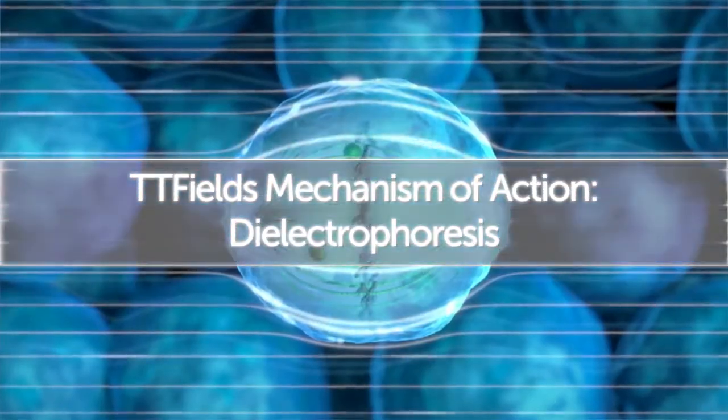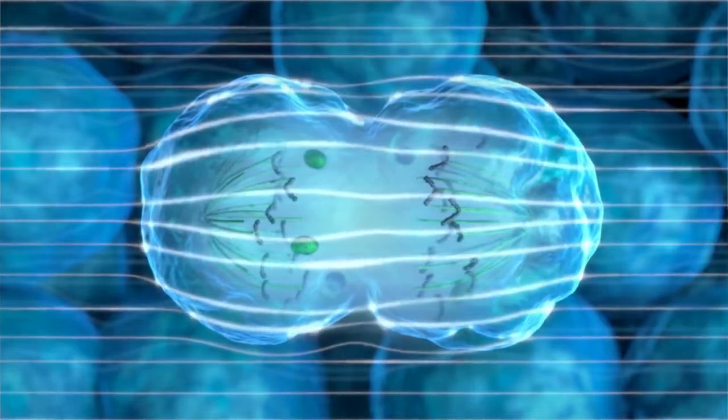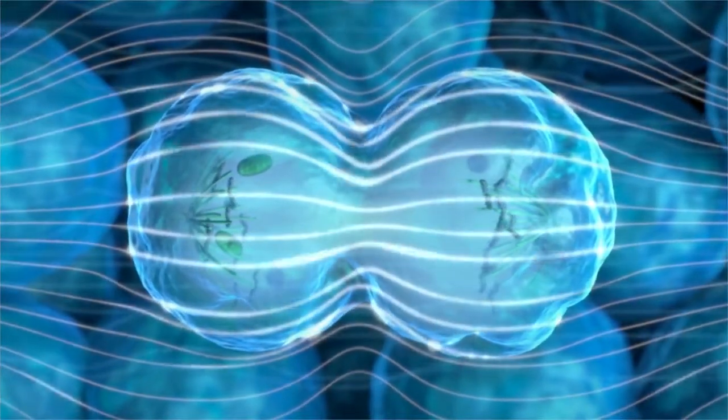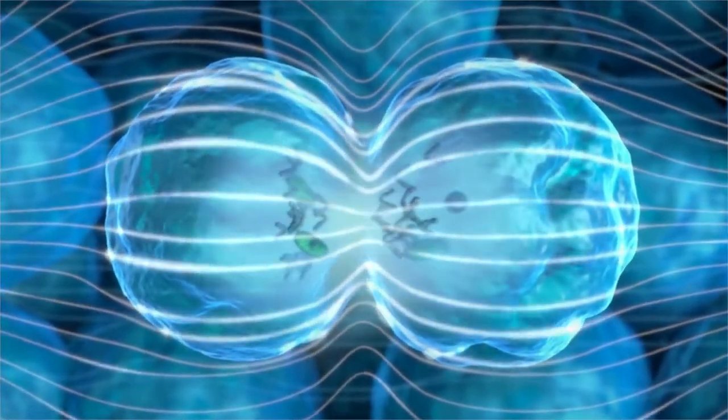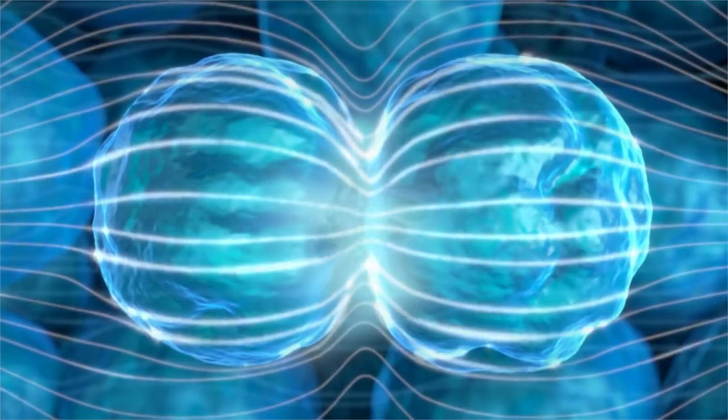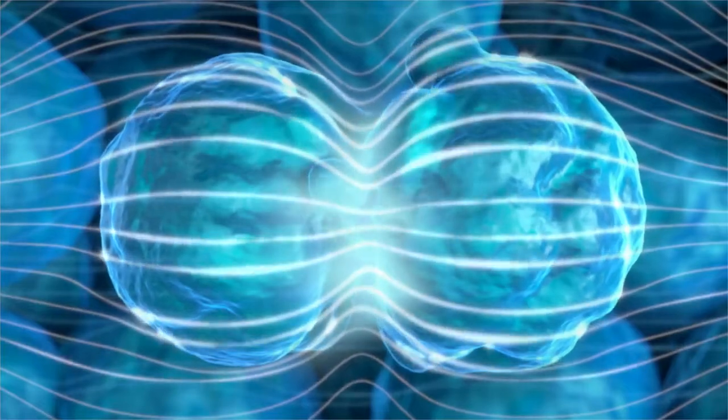In cells that manage to complete metaphase and enter cytokinesis, the hourglass shape that forms leads to a non-uniform electric field within the cell. This results in dielectrophoresis, net forces on polarizable objects toward regions of high field density, concentrating macromolecules and organelles toward the mitotic furrow, leading to structural disruption and cell fragmentation.